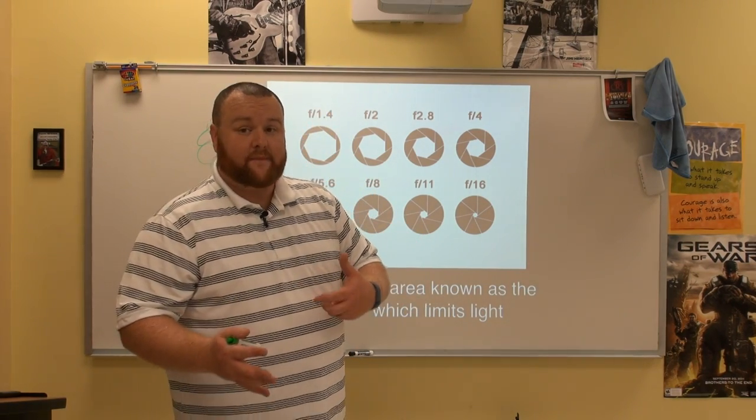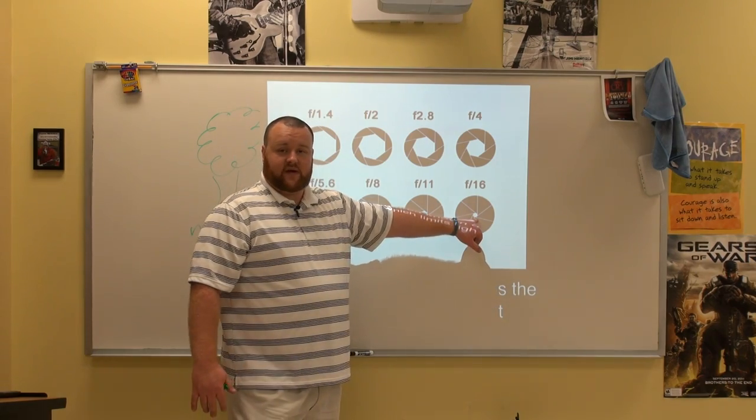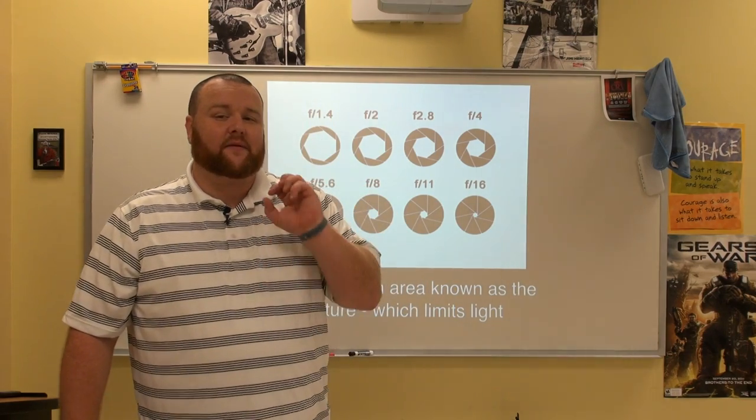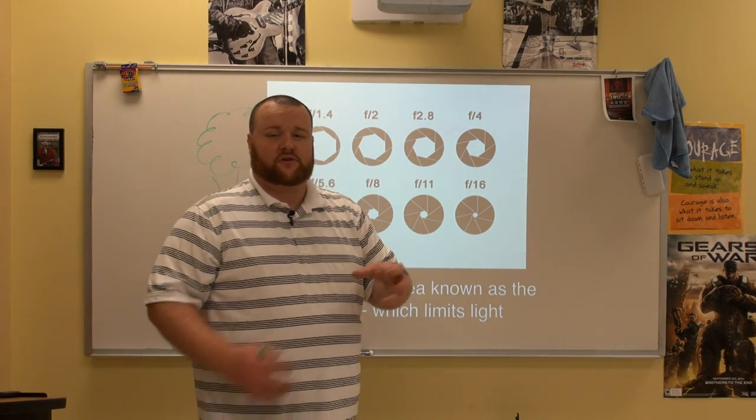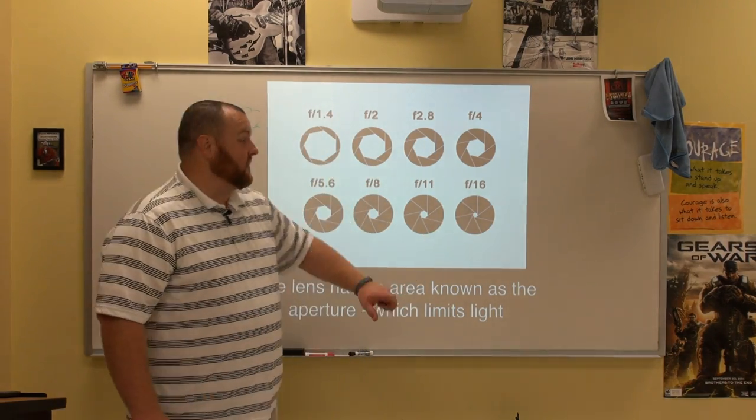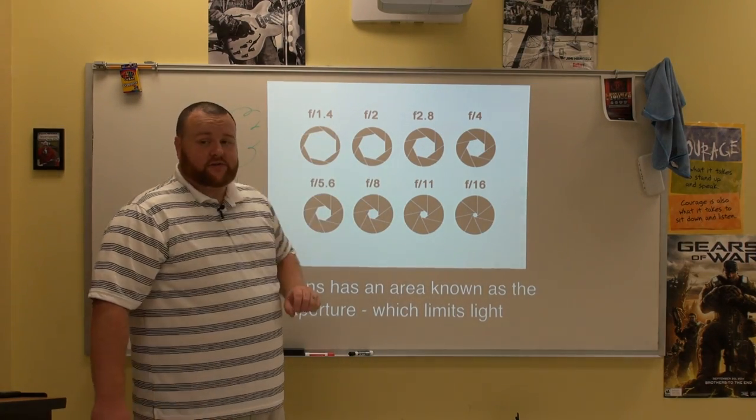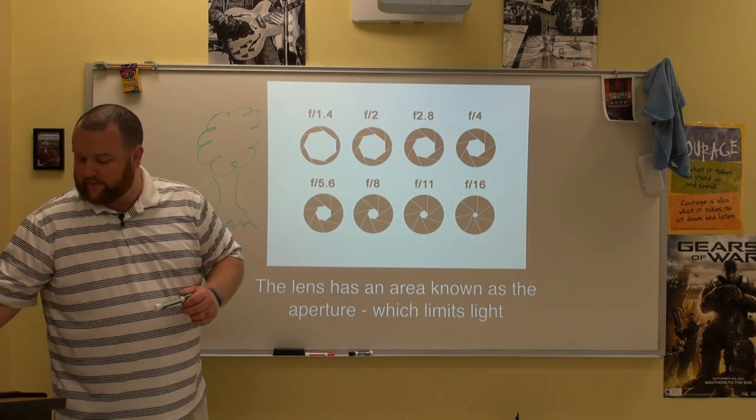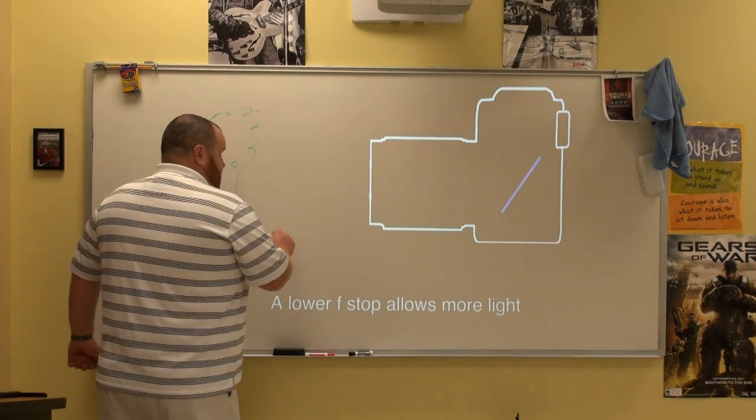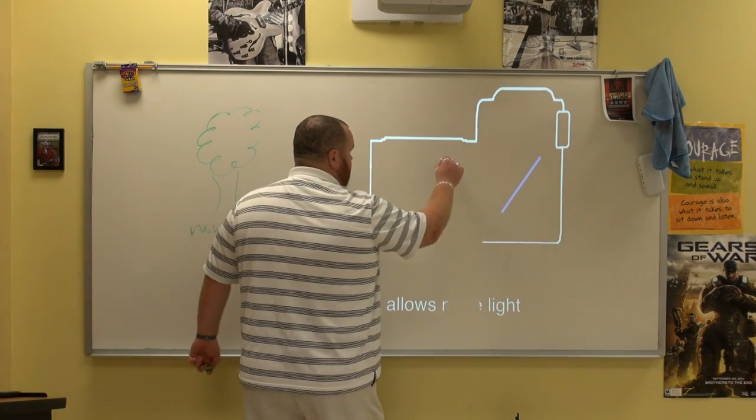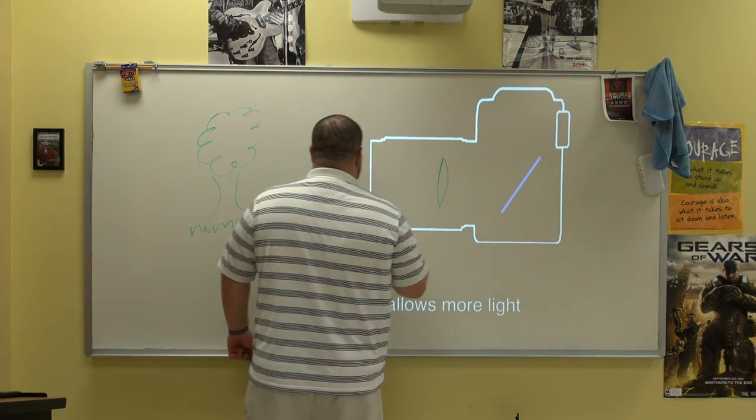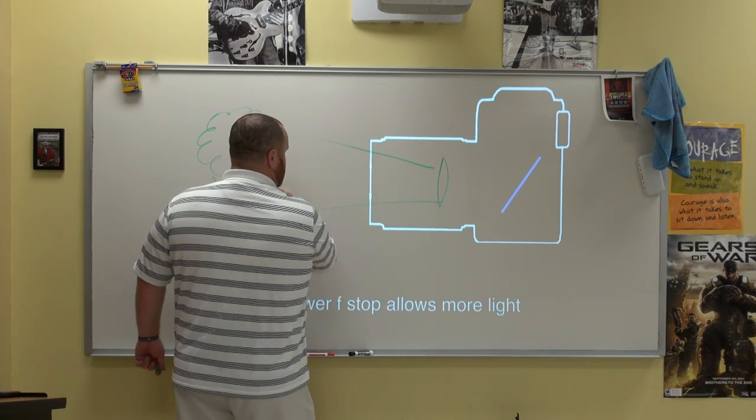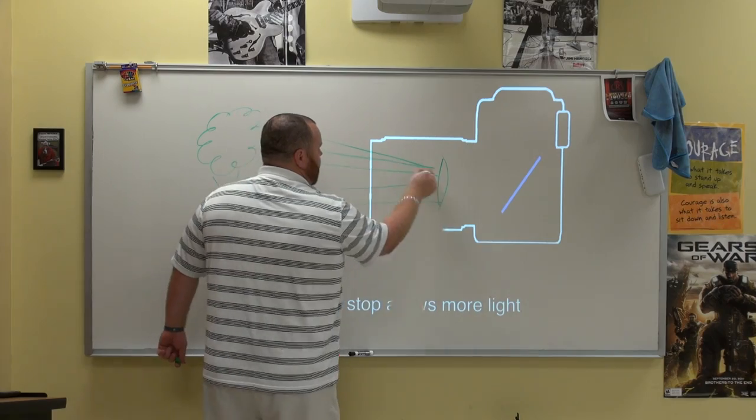When I'm shooting a football game, I'm not going to shoot at an f-16 because it's going to allow just a little bit of light. I'm not going to be able to get my people to stop in motion. There's going to be that blurring and all of that stuff. I'm going to open it wide open and then adjust the shutter, which we'll talk about in a minute. So back to our big camera drawing. I'm going to put the aperture here and I got a big wide open aperture. So the light's coming through.